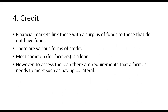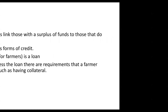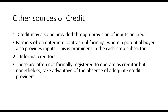The fourth problem is the issue of credit to farmers. Financial markets link those with a surplus of funds to those that do not have funds. The most common form of credit for farmers is a loan. However, to access a loan, there are requirements a farmer needs to meet, such as having collateral.